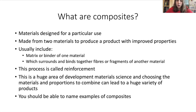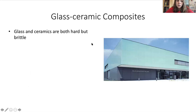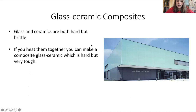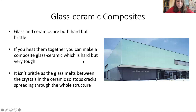Composites vary, so you're not expected to know their structure in detail - you should know some examples and an idea of what's in them. First up, an example is a glass-ceramic composite. Glass and ceramics are both hard but brittle, but if you actually heat a ceramic and glass together you can make a composite which is hard but also really tough. It isn't brittle in the same way because as the glass melts it goes in between the crystalline structure of the ceramic, and if you then get a crack it can't spread through because the glass is in there to hold it together.